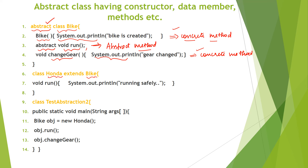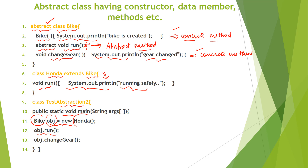Next, we create a subclass called Honda which extends the parent class Bike. The condition is that we must implement the abstract method run() in the subclass. So void run() is implemented as System.out.println("running safely"). Then in the main class, we create an object of type Honda and call object.run(), which prints 'running safely', and object.changeGear(), which prints 'gear changed'.